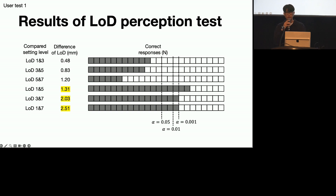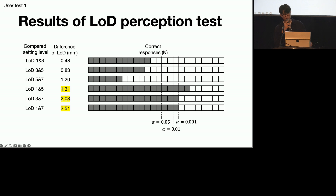This figure shows the results of the LOD perception test — the number of correct answers in each trial consisting of two LOD levels and their corresponding upper risk level in the triangle test. As a result, participants could not distinguish two LOD settings with a difference of up to 1.20 mm. All trials with an LOD difference greater than 1.30 mm were distinguishable.